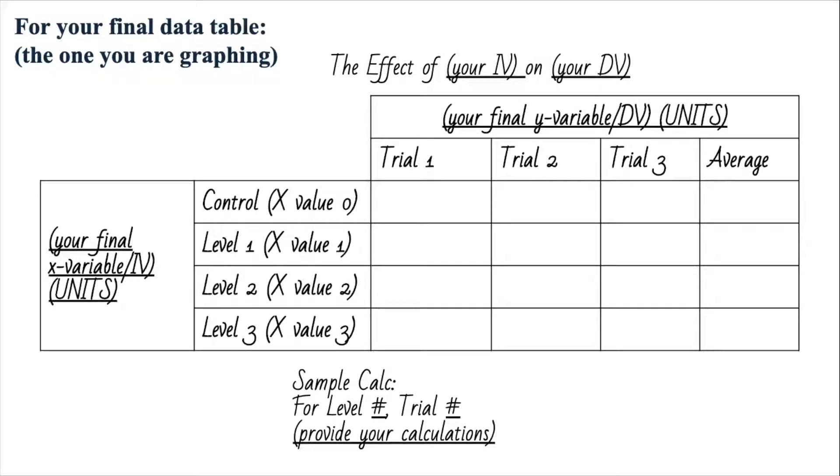For example, if you want to say there's a temperature change, temperature change of five degrees, say level one, trial one. You say for level one, comma trial one, provide your calculations: ten degrees minus fifteen degrees is negative five degrees and that's my change, or something like that. Okay, that's your data table. We will practice how to write it out, how to make it neat at the practice on Wednesday.